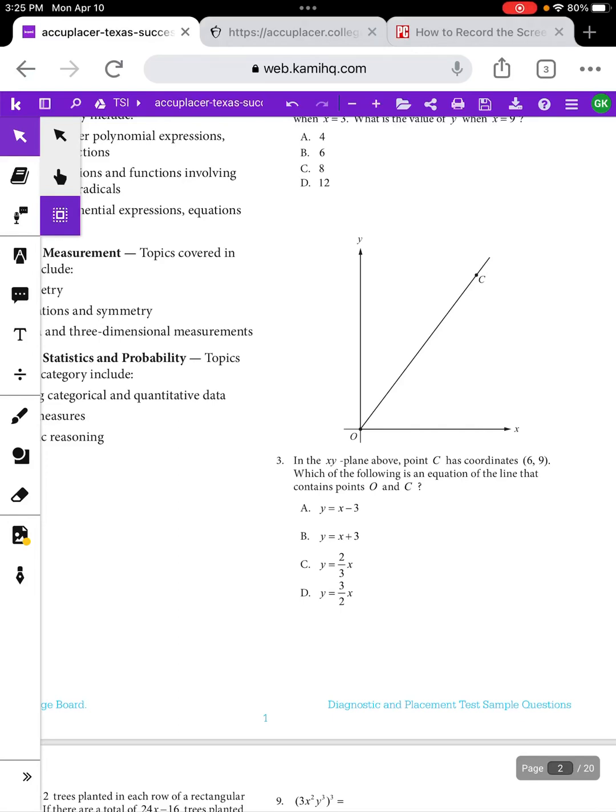All right, let's talk about some algebraic reasoning questions to prep for the TSI. The algebraic reasoning section is the largest section in that first 20 questions of the TSI. There are seven questions over this section, so it's really important that you focus on a lot of these.